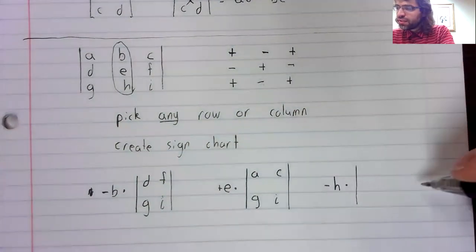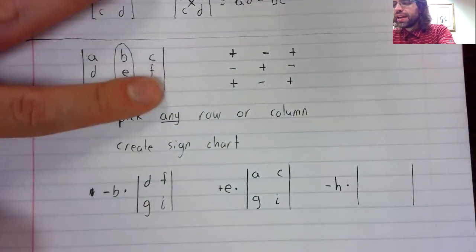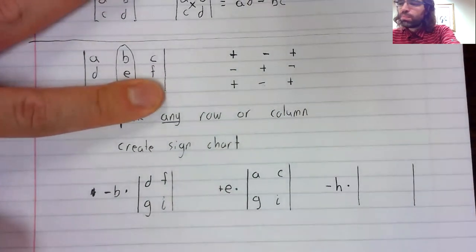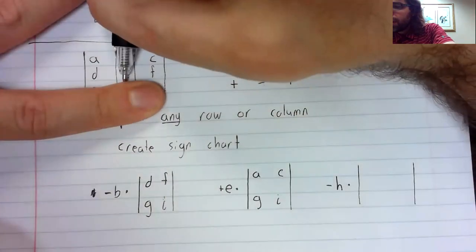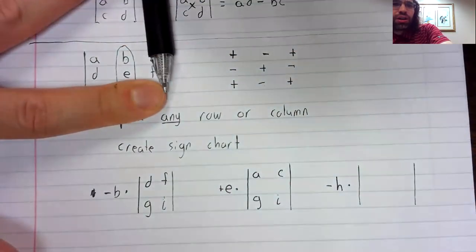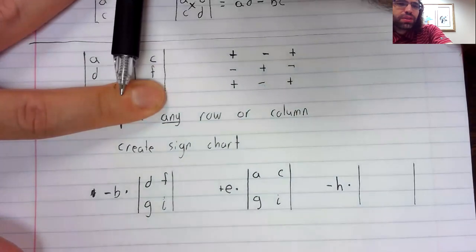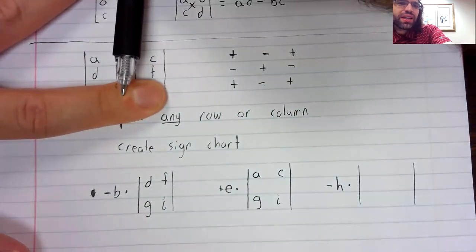And then same thing for h. Cover up the row. Cover up the column. What remains is a, c, d, f.